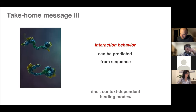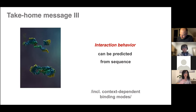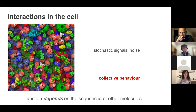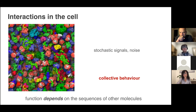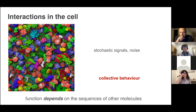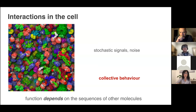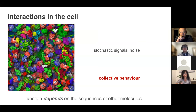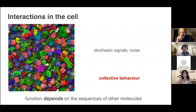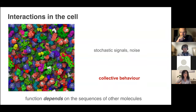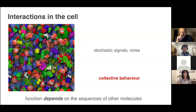The technical message from this part: the interaction behavior, considering all different characteristics, can be predicted from the sequence, including context-dependent binding modes. But you may also ask about the cellular behavior. The cell situation is dense and stochastic, meaning the function of a protein depends on the sequences of other molecules—there will be some collective behavior behind the functionality of the protein.